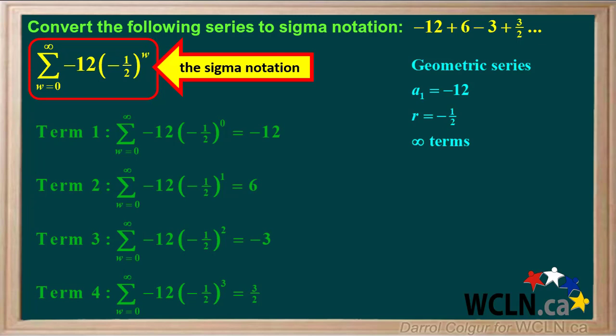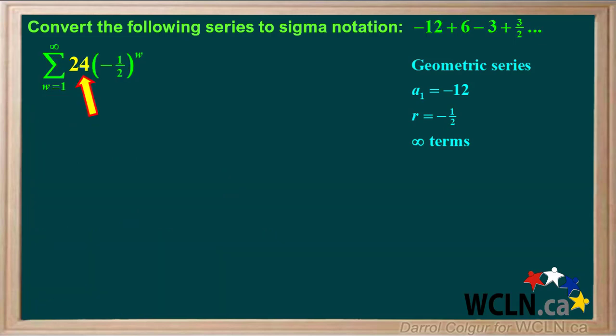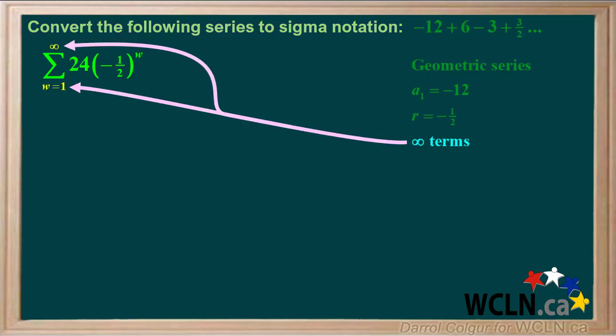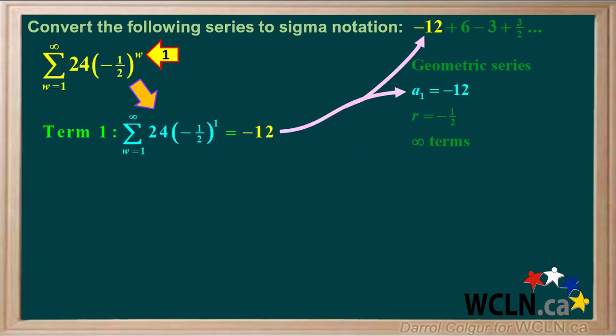However, other correct answers are possible. Let's do an example of one. This time, we'll write 24 here instead of negative 12, and we'll set w as 1 instead of 0 for the first term. Because we have an infinite number of terms, the value of w can range from 1 to infinity. For the first term, w is 1, and 24 times negative one half is equal to negative 12, the correct value for term 1.